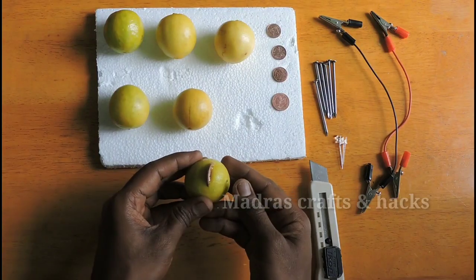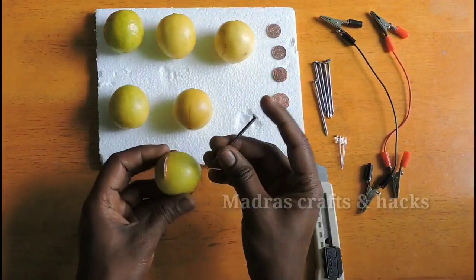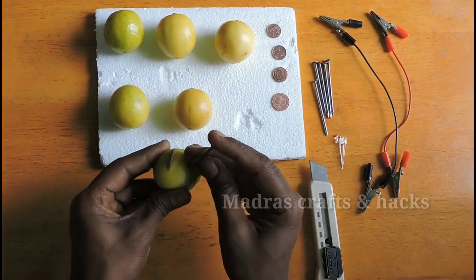The gap should be one inch approximately between them, and they should not touch with one another inside the lemon. There should be some gap.